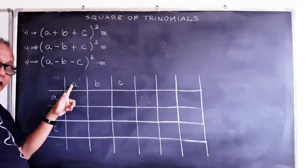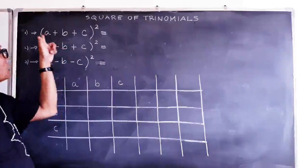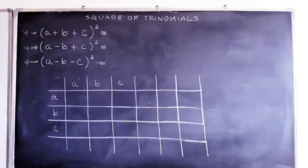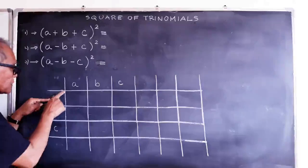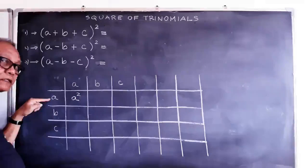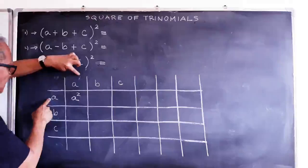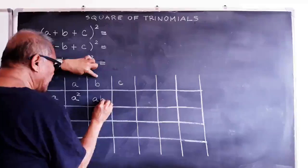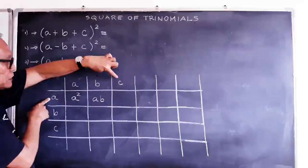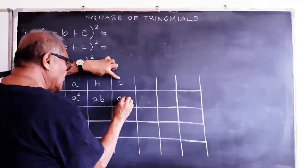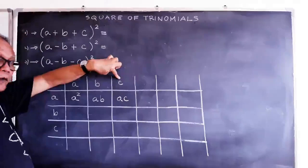So I have here the first: A, B, C across the top, and then times A, B, and C along the side. Let me show you how we work this one out. So we have A times A, which is A squared — one plus one is two.